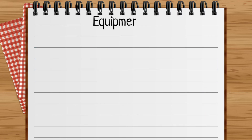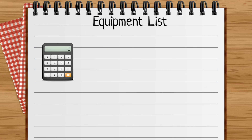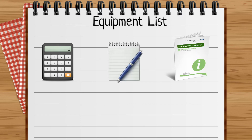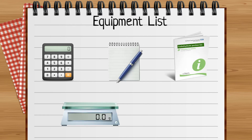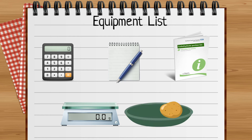To do the calculation you will need a calculator, a notepad and pen, a carbohydrate portion list, some digital scales, and the food you want to weigh.